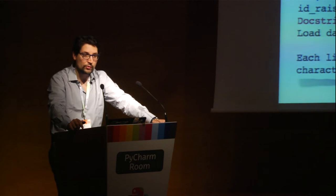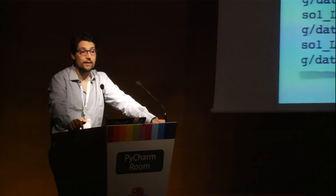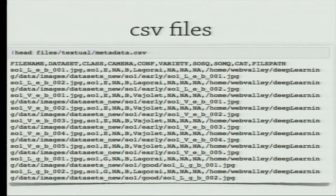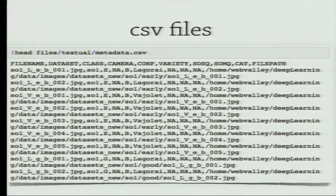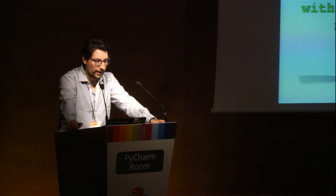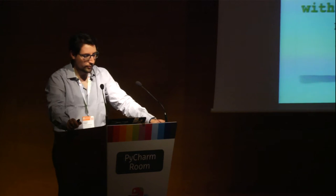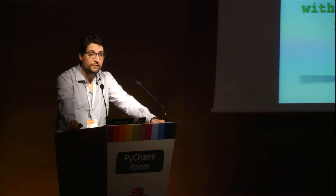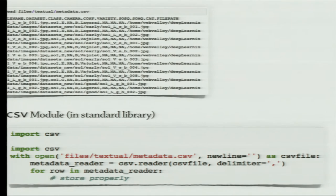Another very common textual format is, of course, the CSV file. CSV stands for comma-separated values, but in general you may have values separated using different characters — not only commas, but also tab characters, tabulations, or spaces, or a combination. In Python, the standard library includes the CSV module, which is specifically devoted to processing CSV files. You open the file, create the reader, iterate over the file line by line, and it's up to you to decide how to store the information.